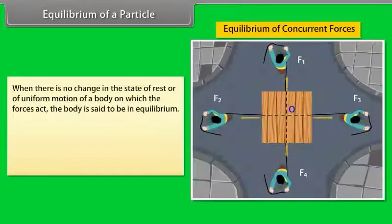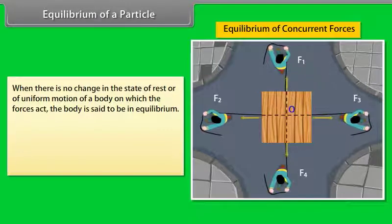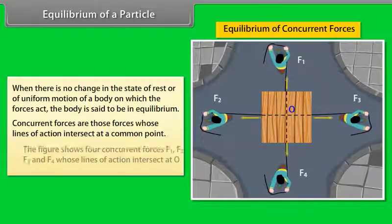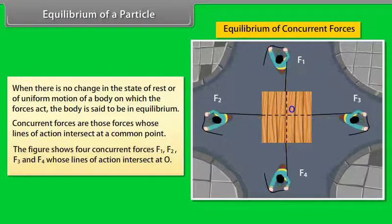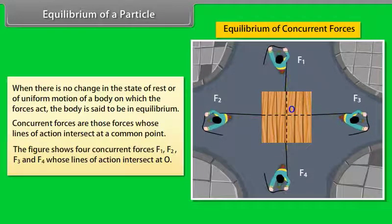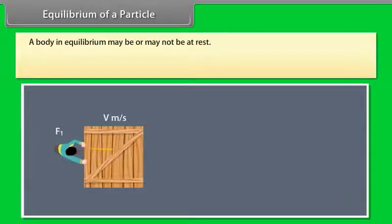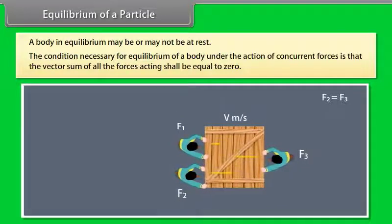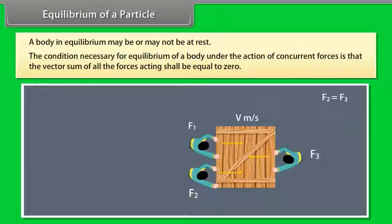Equilibrium of a Particle: When there is no change in the state of rest or of uniform motion of a body on which forces act, the body is said to be in equilibrium. Concurrent forces are those whose lines of action intersect at a common point. The figure shows four concurrent forces F1, F2, F3, and F4 whose lines of action intersect at O. The condition for equilibrium is that the vector sum of all forces shall equal zero.